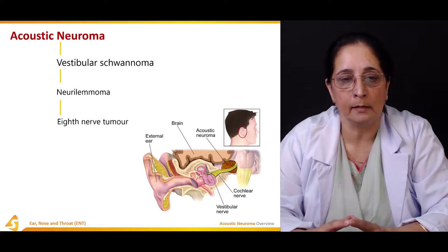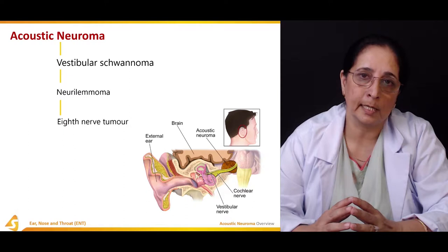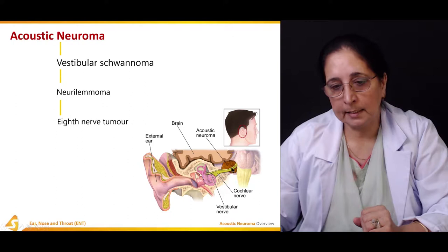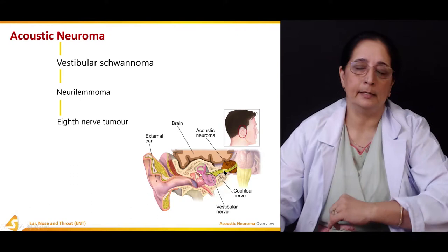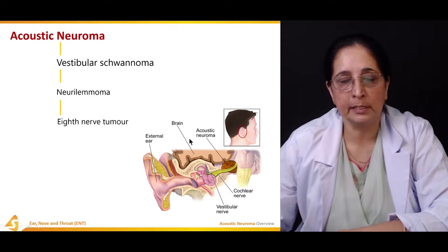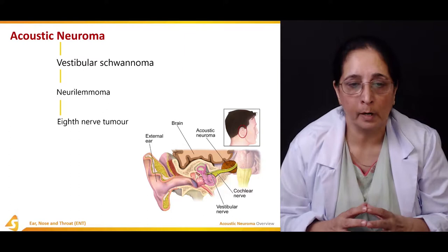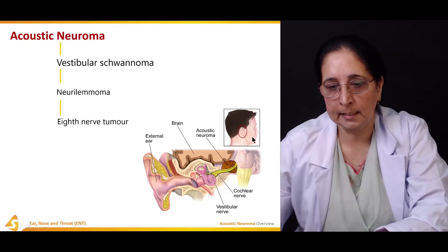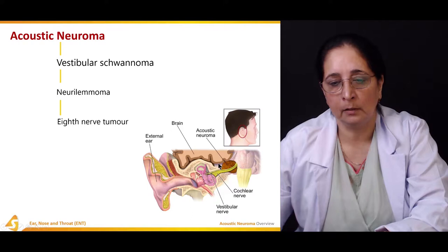It is also known as an eighth nerve tumor, since the eighth cranial nerve is the vestibulocochlear nerve. In the diagram, you can see the acoustic neuroma located close to the cochlear nerve and the vestibulocochlear nerve, which is the eighth cranial nerve. That is the site for the development of acoustic neuroma.